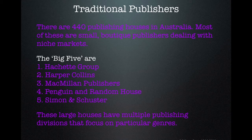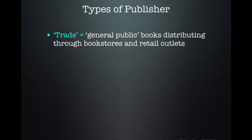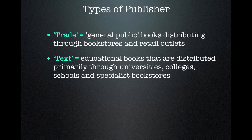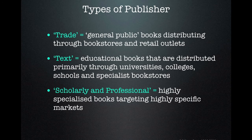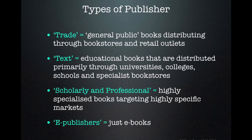Books like the Australian Writers Marketplace give lists of all publishers. There's another category to understand: Trade covers general public books distributed through bookstores and retail outlets — your general fiction and non-fiction. Text covers educational books distributed primarily through universities, colleges, schools, and specialist bookstores. Scholarly and professional publishers deal with very specialised books targeting specific markets. And then there are e-publishers who only produce e-books. The book trade consists of all of these categories.